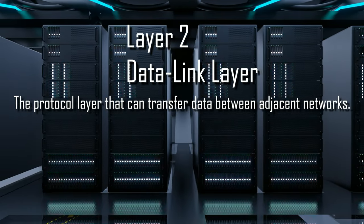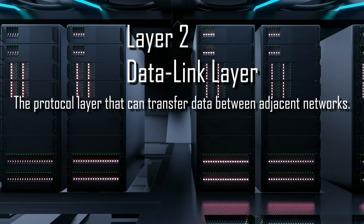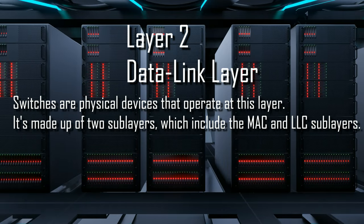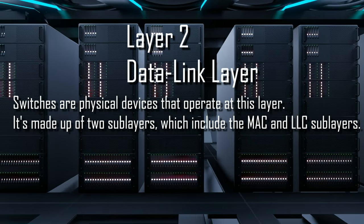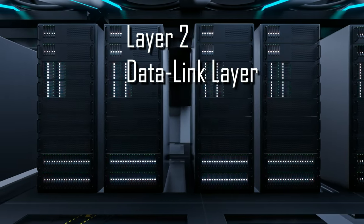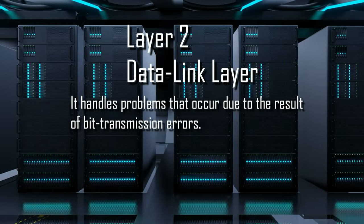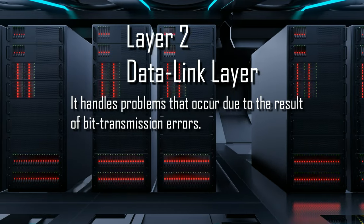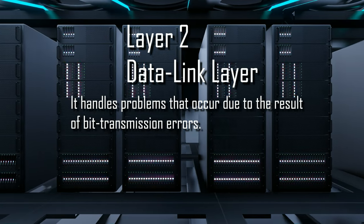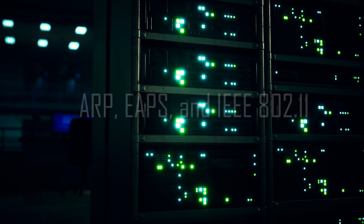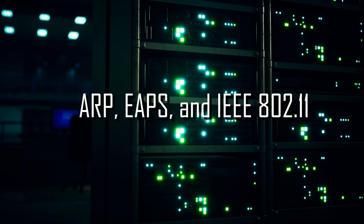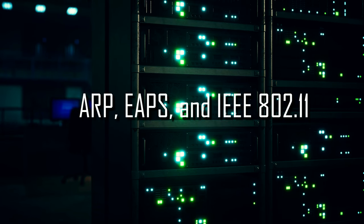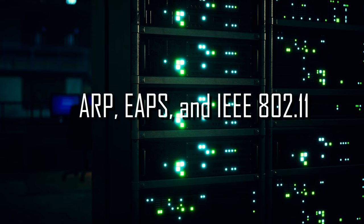Next is layer 2, the data link layer, which is the protocol layer that can transfer data between adjacent networks. Switches are physical devices that operate at this layer. It's made up of two sublayers: the MAC or Media Access Control sublayer and the Logical Link Control or LLC sublayer. Its main functions are to handle problems that occur as a result of bit transmission errors, ensure data flows at a pace that doesn't overwhelm sending and receiving devices, and permit the transmission of data to the layer 3 network layer where it will be addressed and routed. Common protocols are Address Resolution Protocol, EAPS — which is used to create fault tolerance when configuring a primary and secondary path for each VLAN — and IEEE 802.11, which is wireless LAN, like in the layer 1 physical layer.